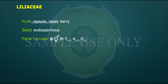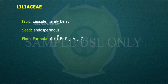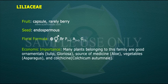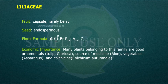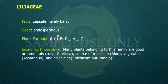Floral formula: BR, P(3+3), A(3+3), G3. Economic importance: Many plants belonging to this family are good ornamentals — tulip, gloriosa. Source of medicine: aloe. Vegetables: asparagus. Colchicine from Colchicum autumnale.